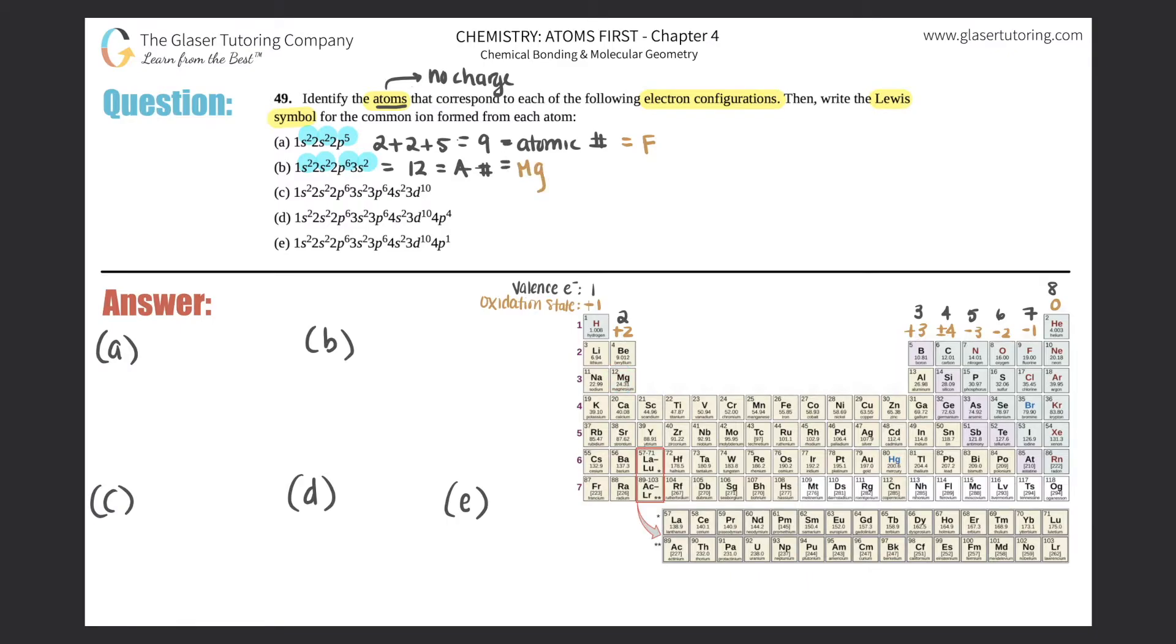For c, we will have to add 2 plus 2 plus 6 plus 2 plus 6 plus 2 plus 10. You guys get the drift, right? So what do we got here? We got 30.